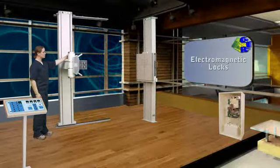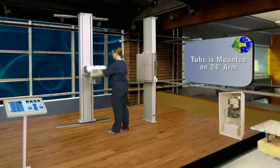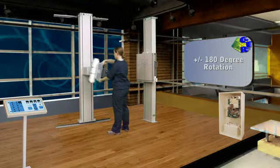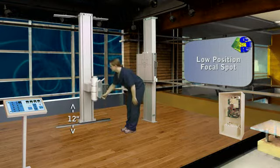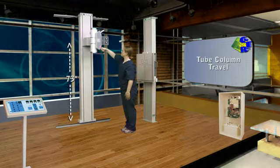Electromagnetic locks are standard on all movements. The tube is conveniently mounted on the 24-inch arm and offers a plus or minus 180-degree rotation. The low position focal spot is 12 inches from the floor, with a travel of up to 73 inches along the tube column.